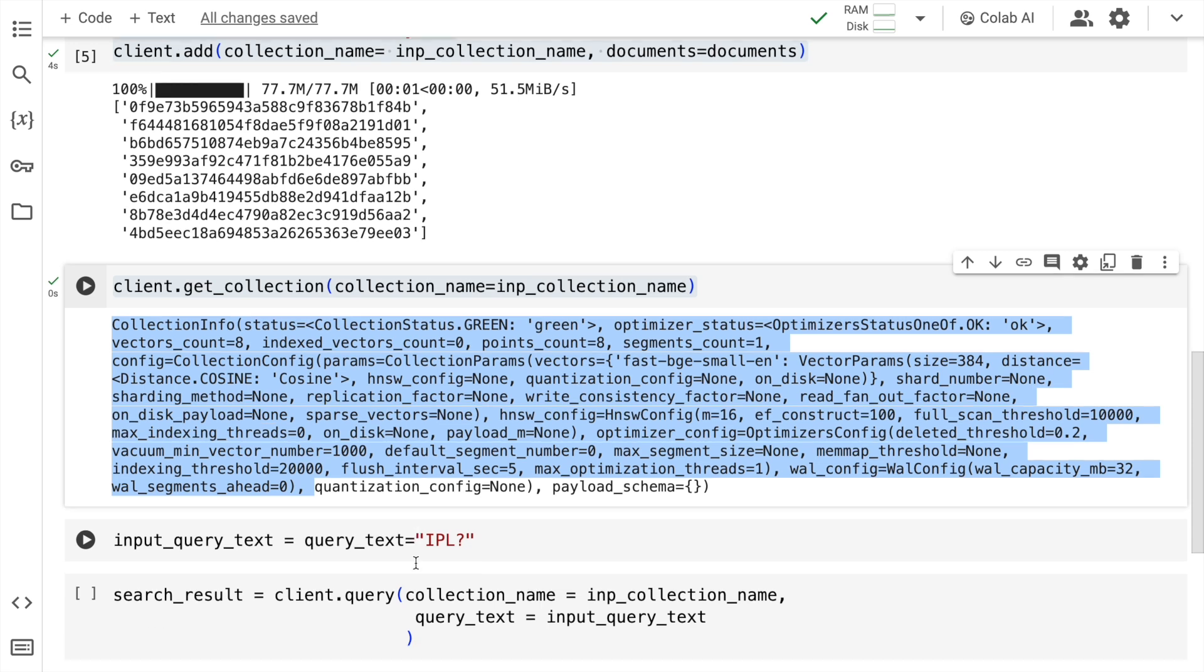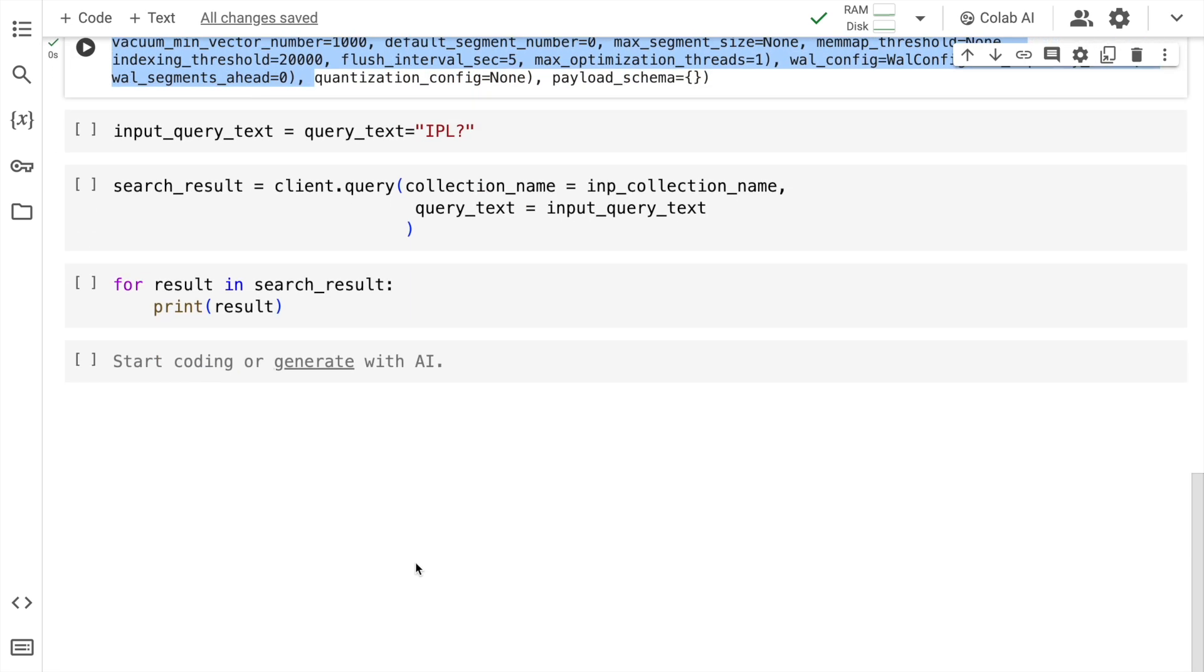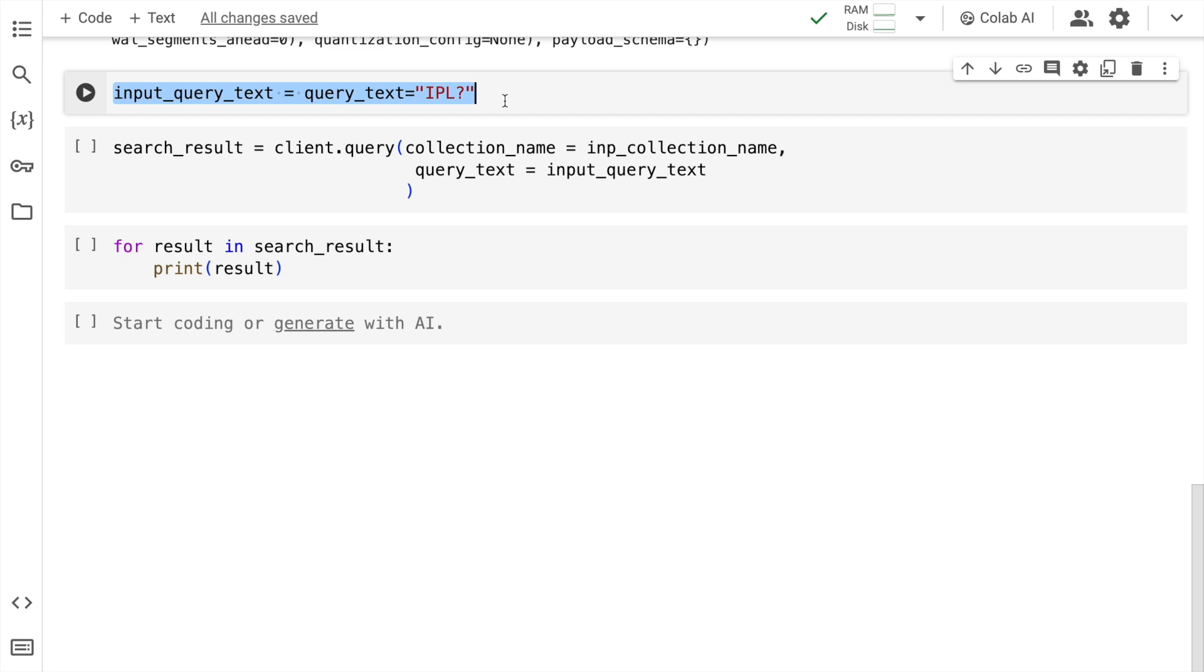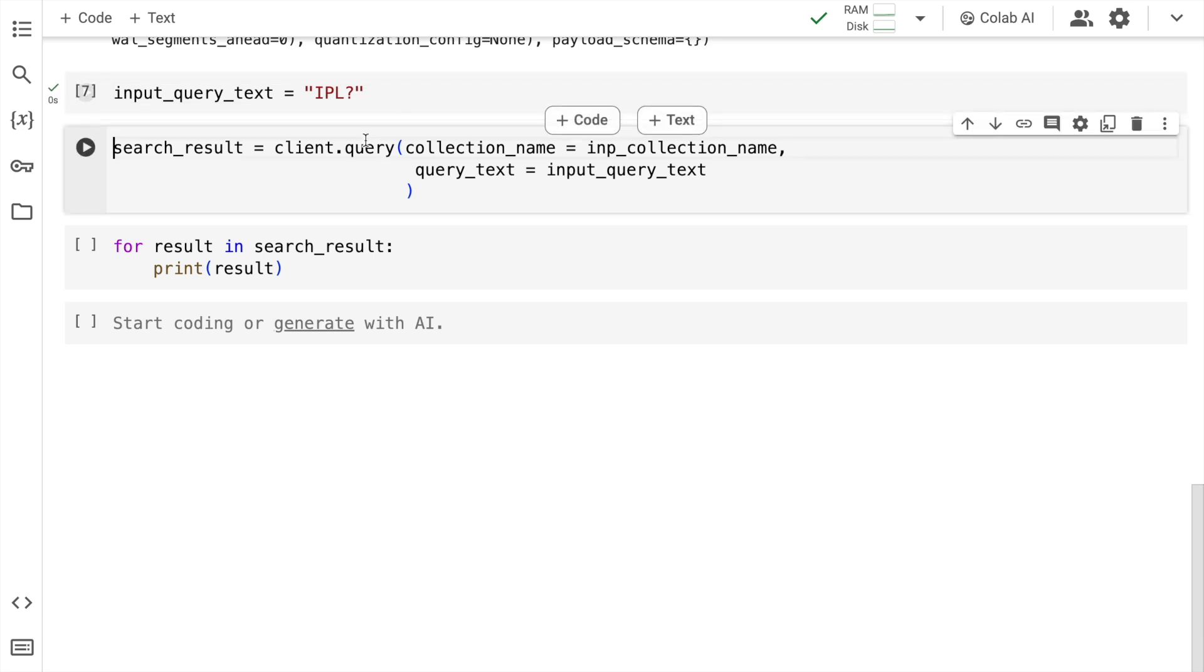Now that we have everything set up, let's query our database and get some results. So imagine I have an input query text called as IPL. There was a mention of Sachin playing the IPL. I don't know exactly which document it falls into. So I will create a variable called as input_query_text. I will kind of equate that to IPL, which is what I have here. Now what I will do is I will say client.query. I will specify the collection name that I want to search for the result, and I will also pass in the input query text which is the variable that we have created above. So I will get a search result.